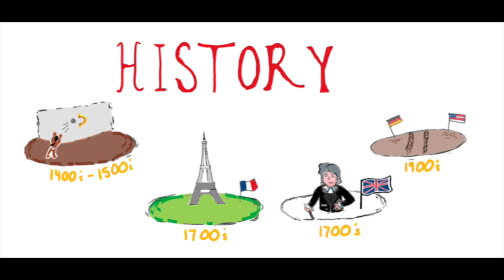Rubber is everywhere. Rubber has been used for thousands of years for a variety of different reasons. Did you know the first human use of rubber was in Mesoamerica in the late 1400s to 1500s by the Olmec tribe? It was used to make rubber balls for a culturally significant ball game, Pok-a-Tok.